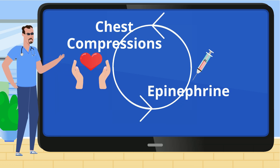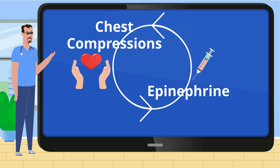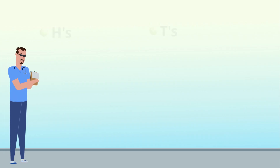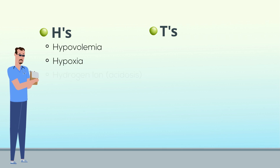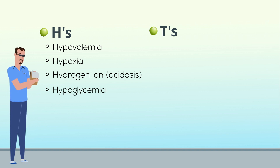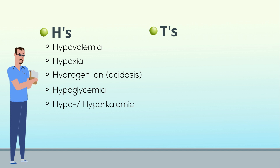Then you look for the underlying causes of PEA. Those potential underlying causes are called the H's and T's in PALS. The H's are hypovolemia, hypoxia, hydrogen ion — that means acidosis, but acidosis doesn't start with an H, so you have to get creative — hypoglycemia, hypo- or hyperkalemia, and hypothermia.